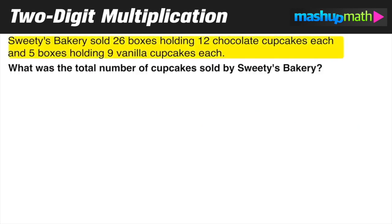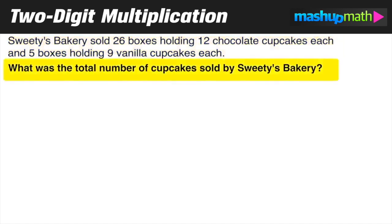Welcome back everyone. In this problem we get to use our math skills to model a situation. Sweetie's bakery sold 26 boxes holding 12 chocolate cupcakes each, and five boxes holding nine vanilla cupcakes each. Our task is to find the total number of cupcakes sold by Sweetie's bakery.